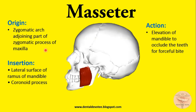The masseter muscle originates from the zygomatic arc — it is part of the zygomatic process of maxilla. Its insertion is on the lateral surface of the ramus of the mandible and also on the coronoid process. Its action is elevation of the mandible to occlude the teeth for a forceful bite. It is a very powerful muscle.